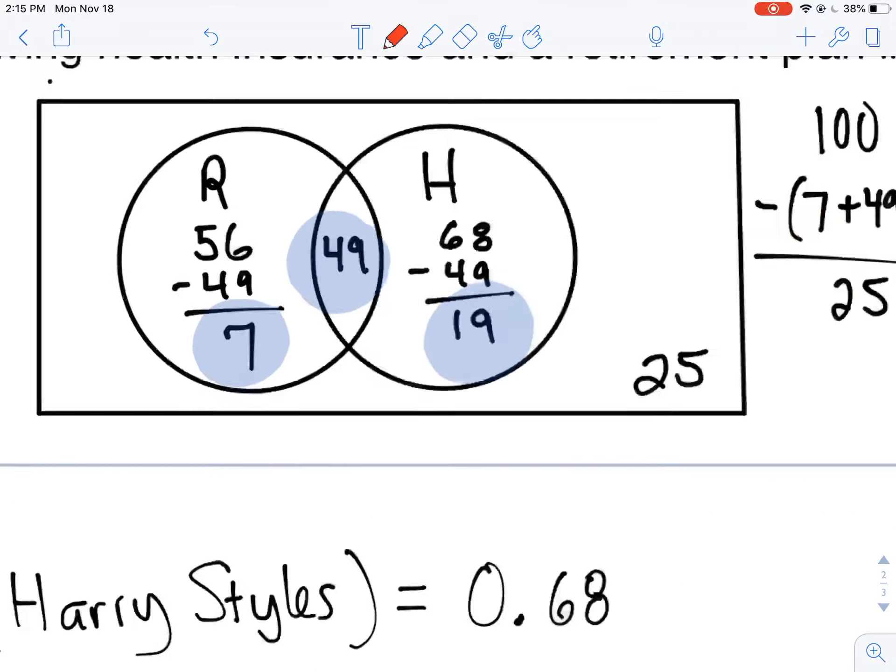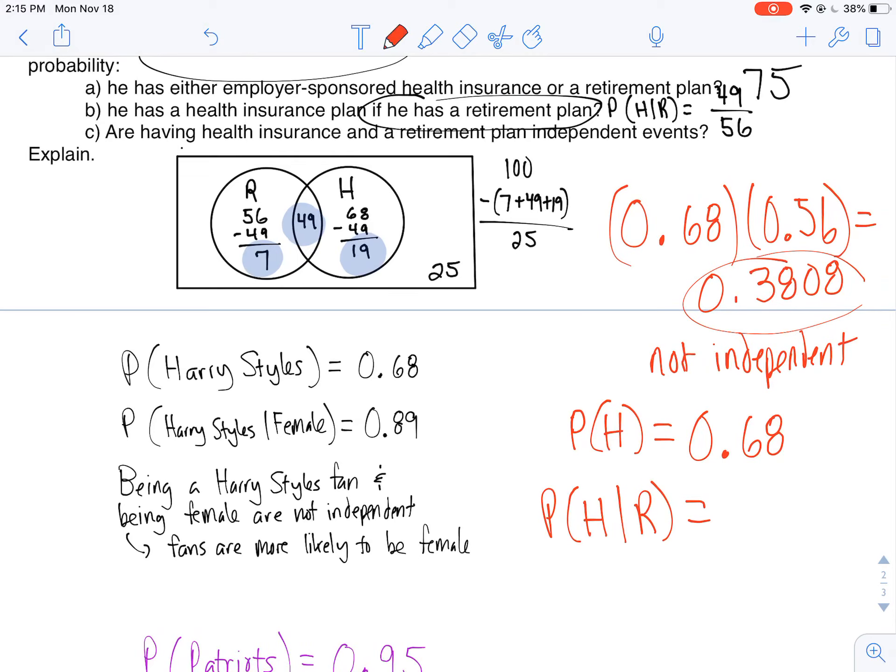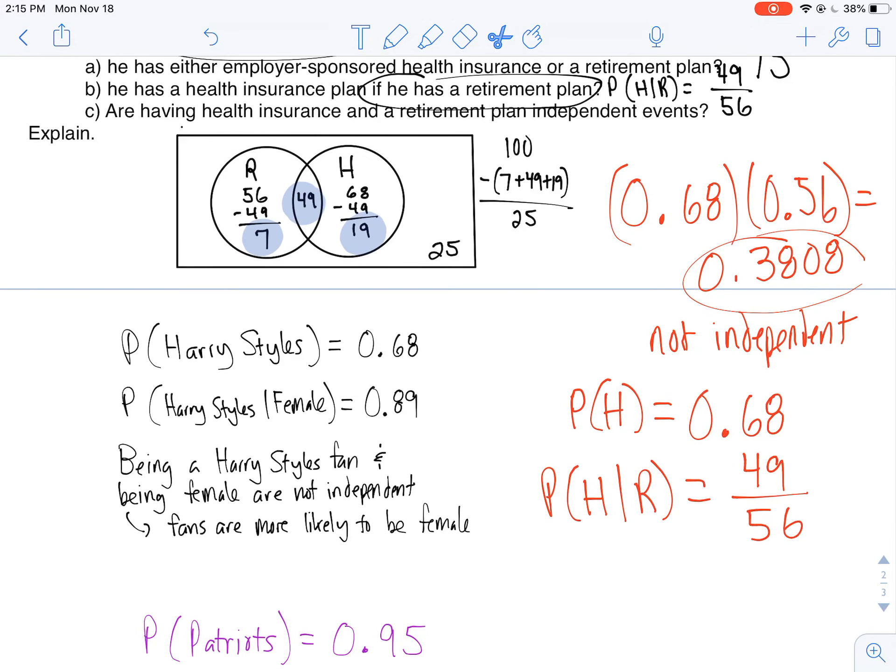So I'm looking at those with the retirement plan, which is 56, and then those who have health insurance, it's gonna be 49. Let's divide that out: 49 divided by 56. I do not get 0.68. As a matter of fact, I get 0.875, which tells me they aren't independent. If they were independent, I would be getting the same probability.